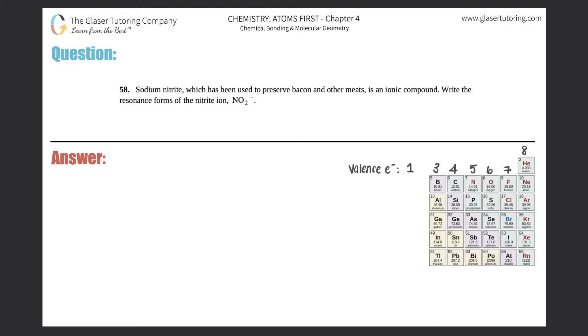Number 58: Sodium nitrite, which has been used to preserve bacon and other meats, is an ionic compound. Write the resonance forms of the nitrite ion, which is NO2 minus. Okay, so looks like we're just breaking down NO2 minus and doing its resonance structures or its resonance forms.